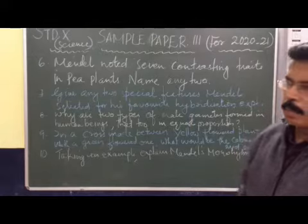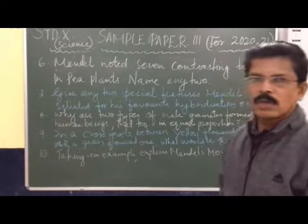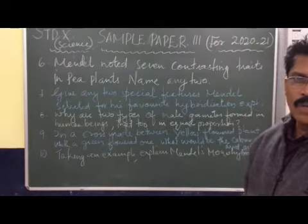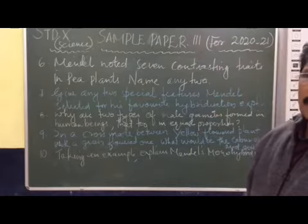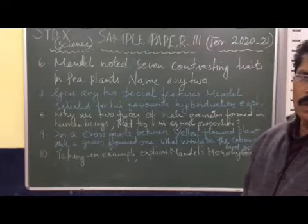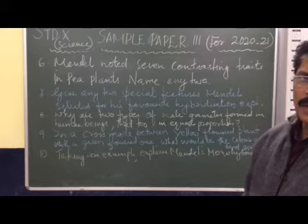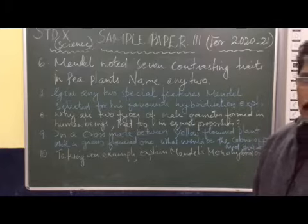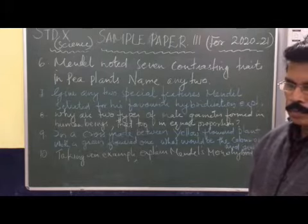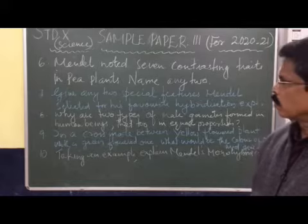So we have to give two examples of contrasting traits noted in pea plants. Seven contrasting traits - you can see flower color, position of the flower, fruit shape, and position of the flower.